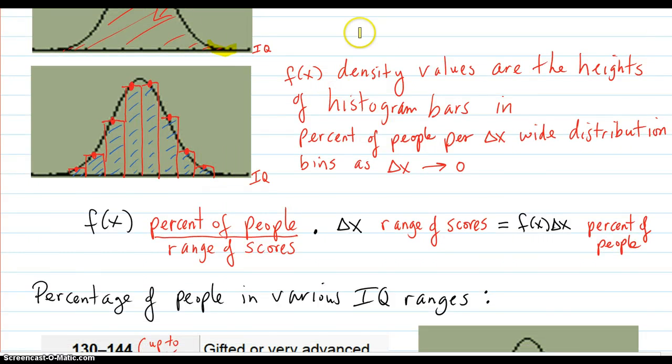And then as far as the f(x) density values themselves. In other words, what creates this actual curve here? You know, what determines those heights? The density values are the heights of histogram bars as shown here, like a bar chart.